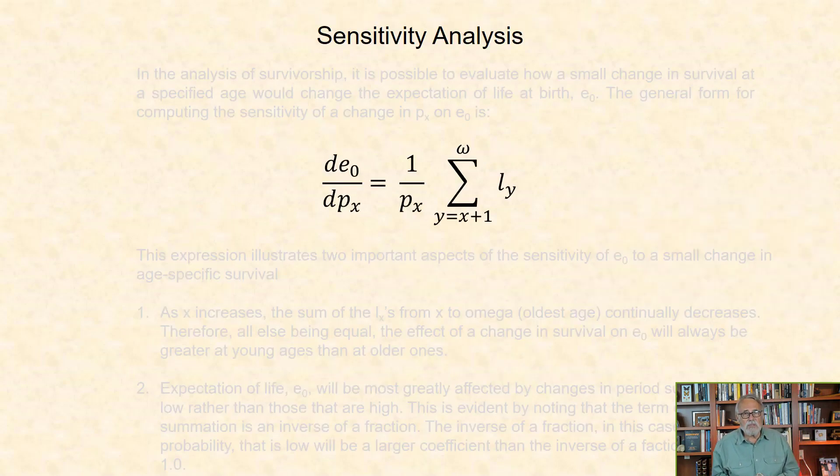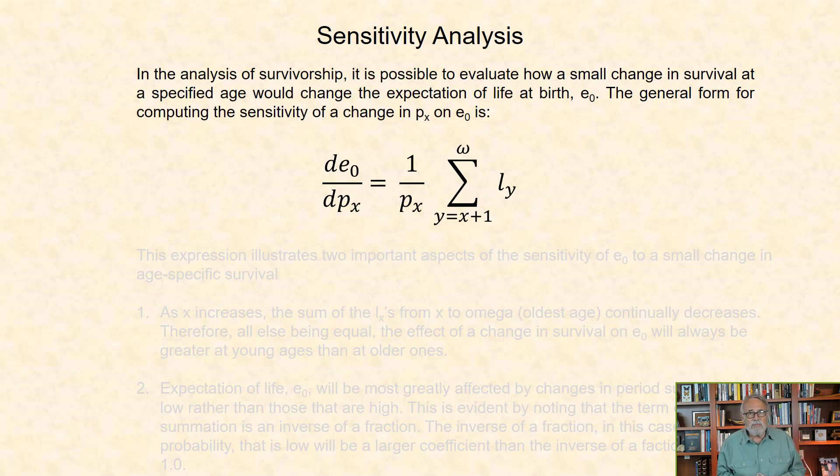The last model I discuss in this module is the sensitivity analysis for E0 to survivorship, PX. In the analysis of survivorship, it is possible to evaluate how a small change in survival at a specified age would change the expectation of life at birth, E0. The general form for computing sensitivity of a change in PX on E0 is given in this formula.